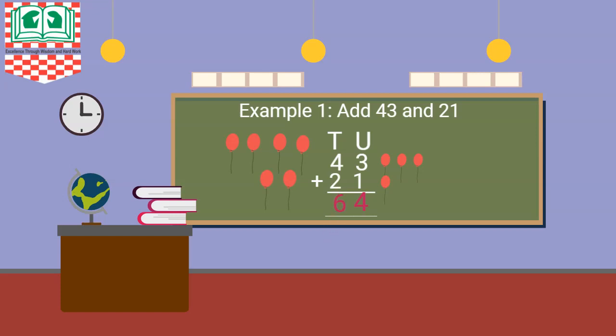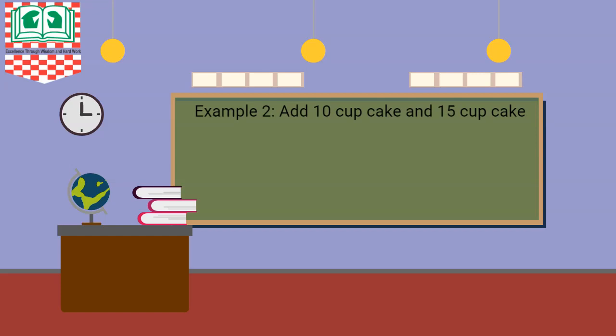Another example to help us understand better. We're going to add cupcakes together: 10 cupcakes and 15 cupcakes. Arrange under the tens and units. You have your 10 and then you have your 15. Don't forget your plus sign.